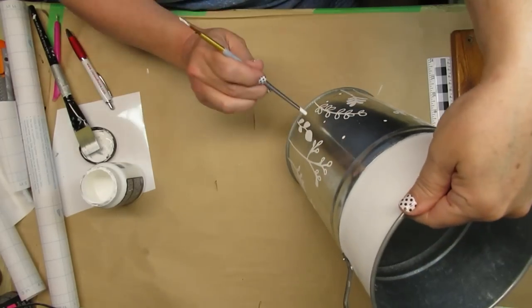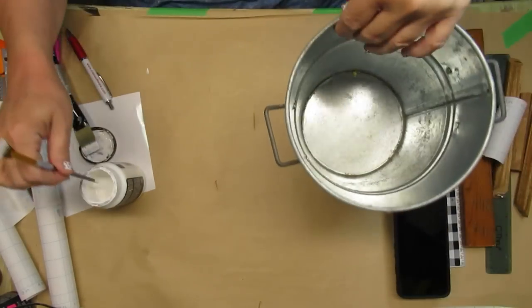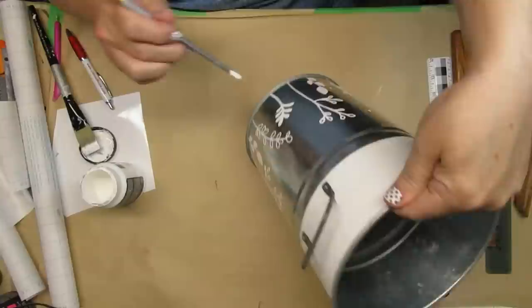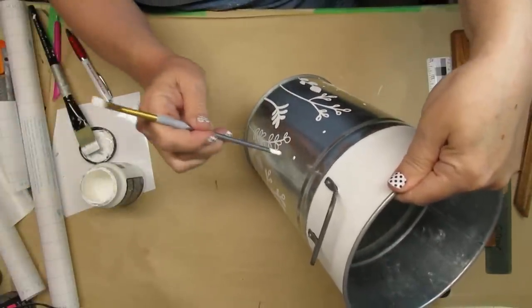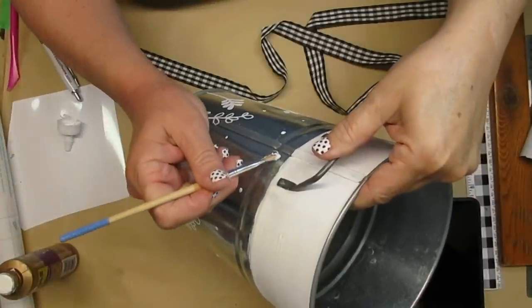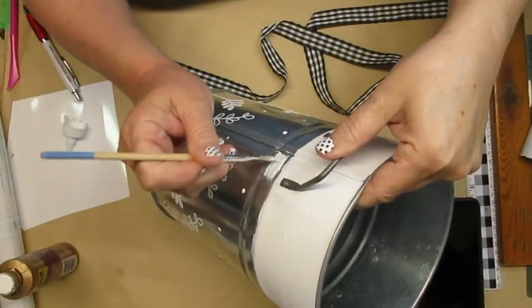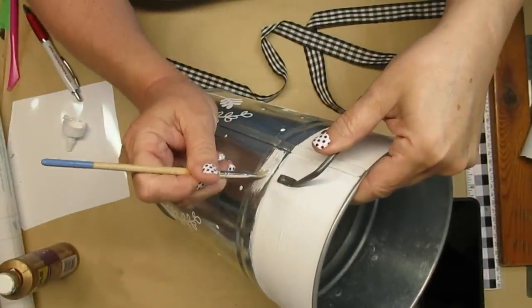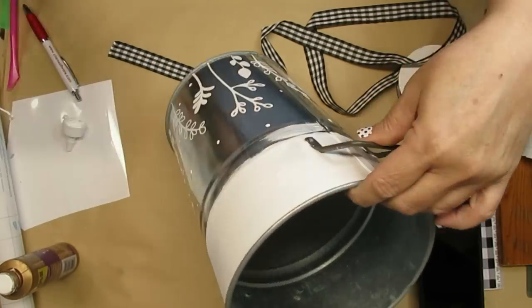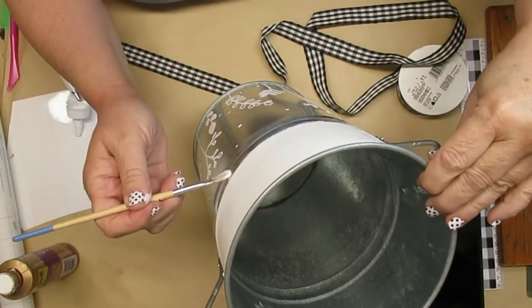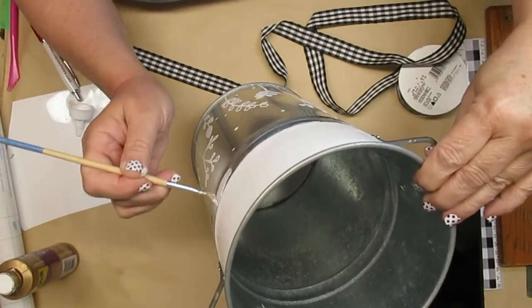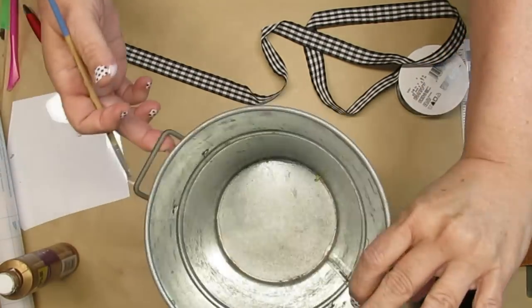So I ended up just adding some dots all the way around the tin to make it look really cute. To make the bucket a little bit more whimsical, I'm using some of Aileen's tacky glue and I'm going to use some of this buffalo check or gingham ribbon in the black and white and I'm going to just put it across that band all the way around.